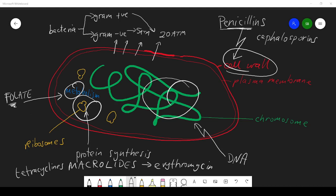And the sulfonamides work by inhibiting the production of folate. So these are some drug classes.